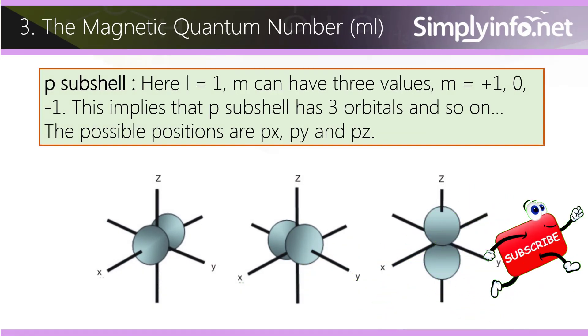p subshell: Here l equals 1. m can have three values: m equals plus 1, 0, minus 1. This implies that the p subshell has three orbitals. The possible positions are px, py, and pz.